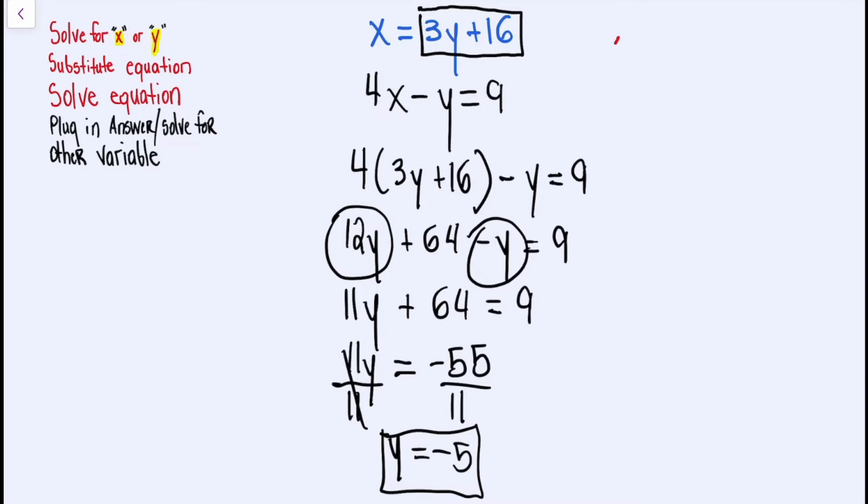We're going to go out here in red. And now, X is equal to three times, and remember, Y is negative 5. Negative 5 plus 16. We're going to follow the order of operations. So we have negative 15 plus 16. And we're going to get an answer of X is equal to 1.